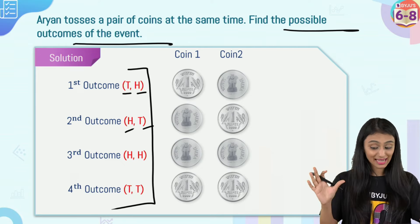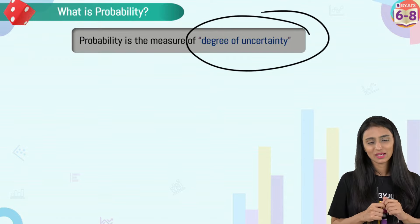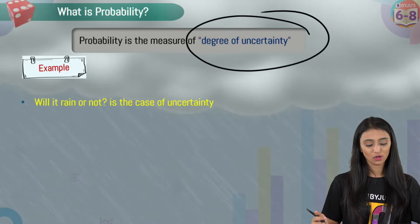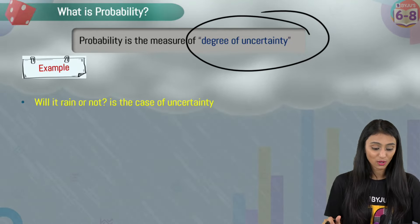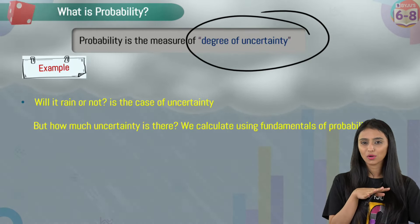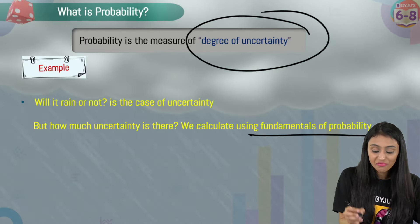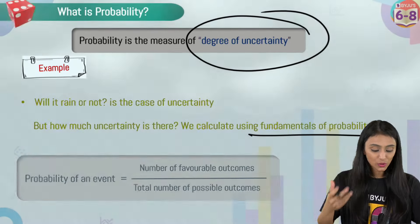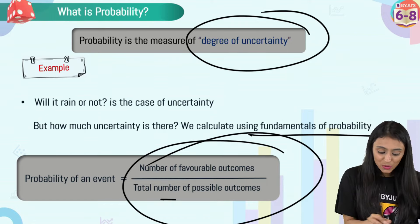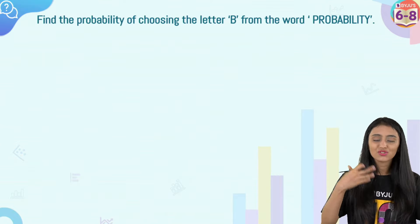Now, what is probability? It is the measure of the degree of uncertainty. For example, will it rain or not? If you're 70% sure it will rain, there's still 30% uncertainty. To find the probability of any event, the formula is: number of favorable outcomes divided by the total number of possible outcomes.